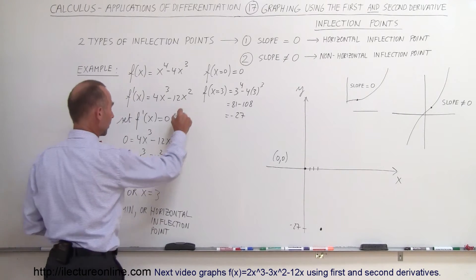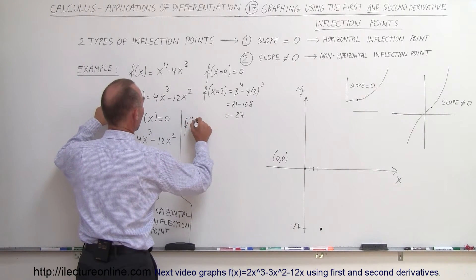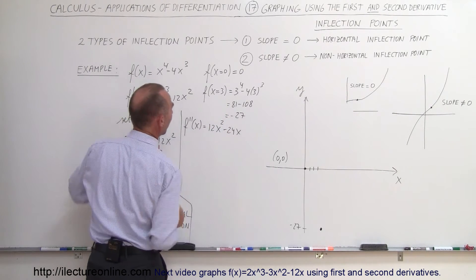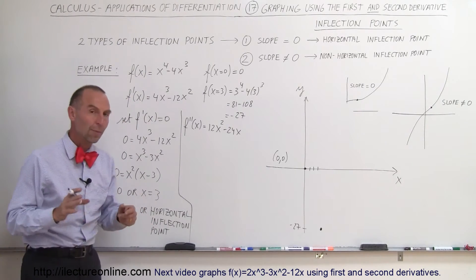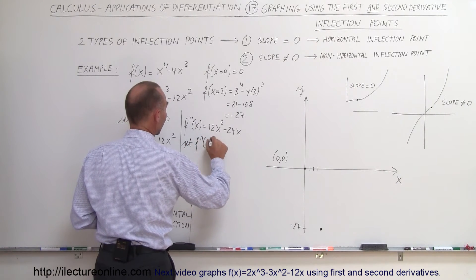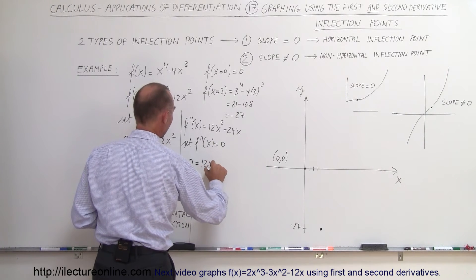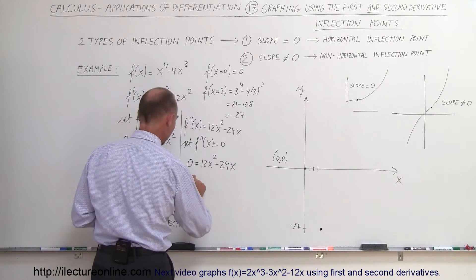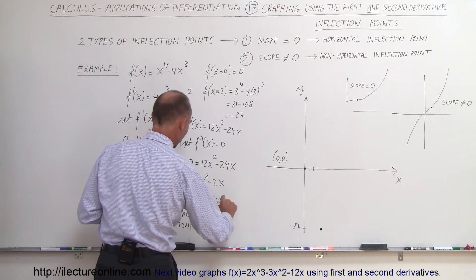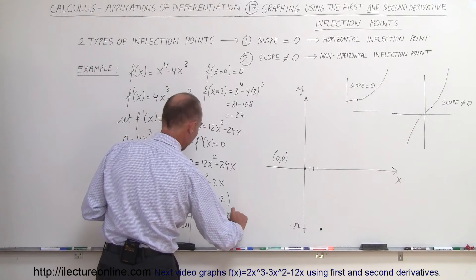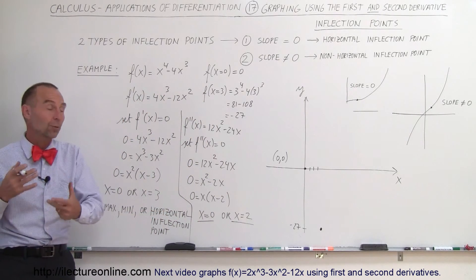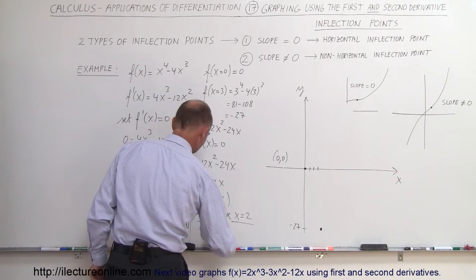Now we'll take the second derivative. f''(x) = 12x² - 24x. Set f''(x) equal to zero — that's how we find the inflection points. So: 0 = 12x² - 24x. Divide both sides by 12: 0 = x² - 2x. Factor out x: 0 = x(x - 2), which means x = 0 or x = 2. We now know for sure that at those two x values, those are inflection points.